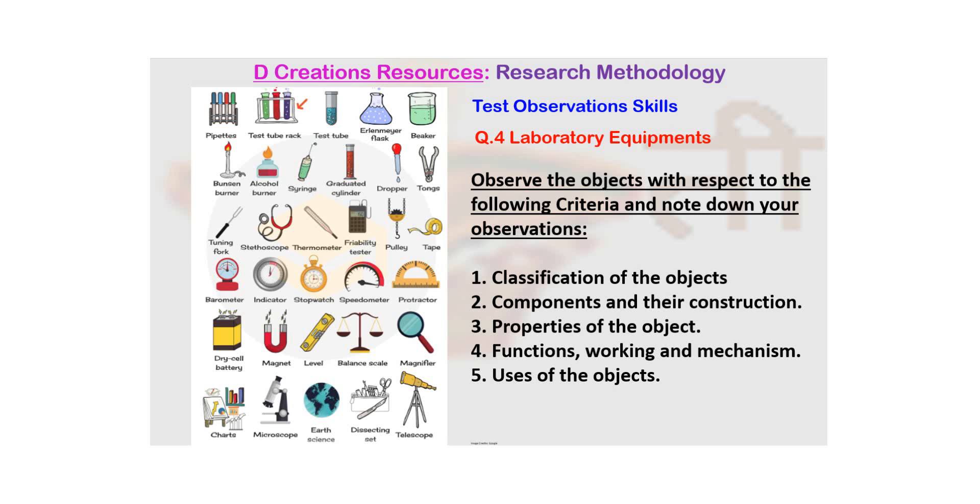The first one is classifying the objects. Second is describing the components and their construction. An object will have multiple components and you need to talk about them. Third is the properties of the object.